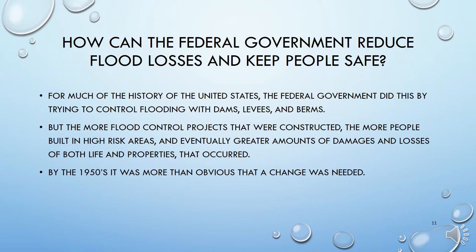Unfortunately, the more projects that were constructed to try to protect people, the more people would build in the areas protected by those structures. Eventually, because structures are only designed to handle up to a certain size event, there were greater amounts of damages and losses when those events were exceeded. Or in some cases, because those structures were not properly maintained, they catastrophically failed. By the 1950s, it was more than obvious to the federal government that a change was needed — they simply could not afford to keep doing the same thing and getting the same results.